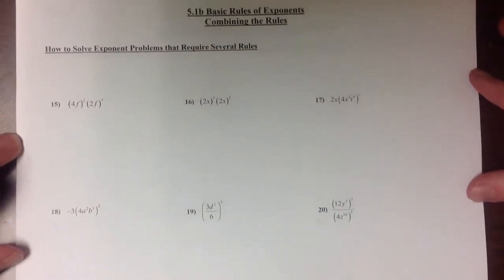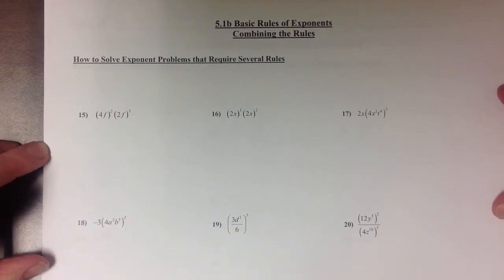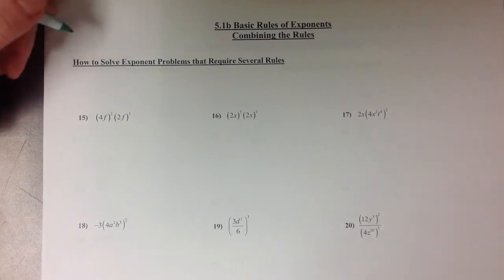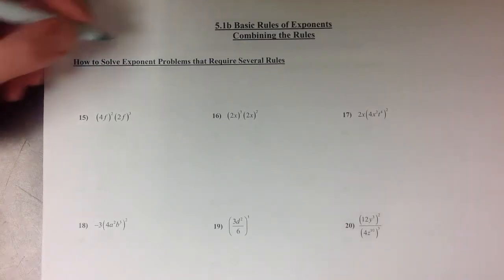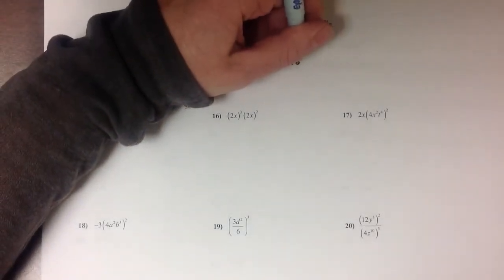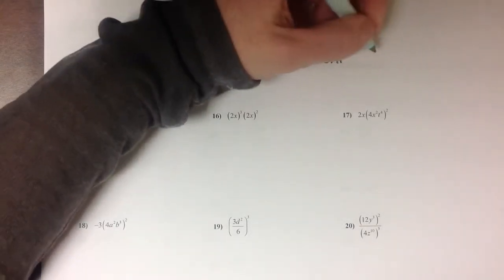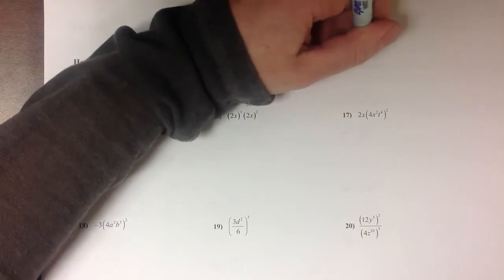Section 5.1b starts to talk about how we can combine these rules together. The things I want you to keep in mind when you're doing these is that we still follow order of operations. You saw that just a little bit in problem 12.